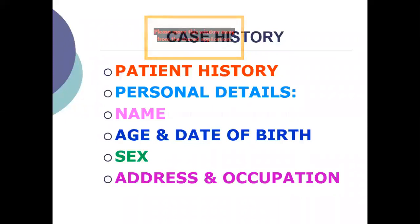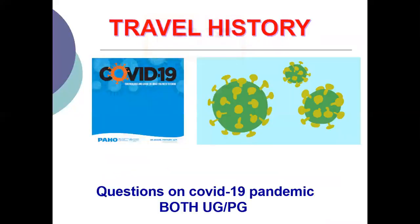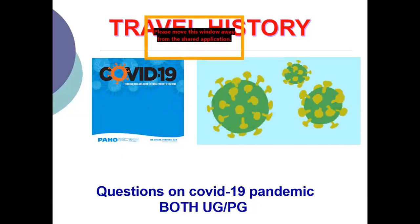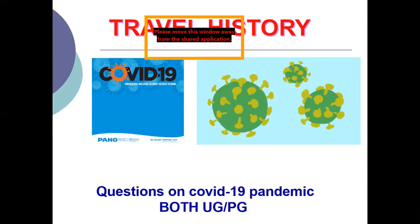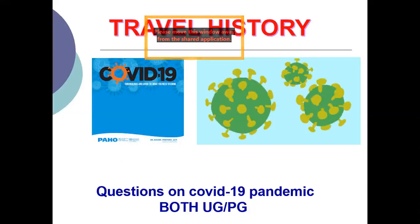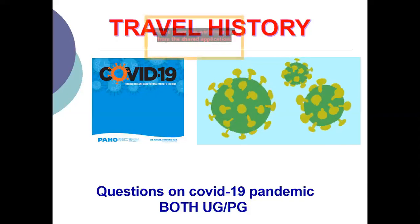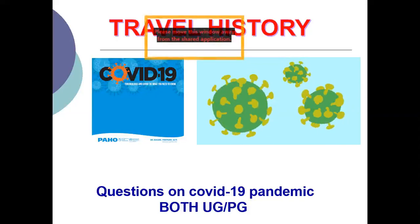Address is nothing but your geographical location - that is also very, very important. Now, to add to the previous slide, the basic things all of you know from the various history forms of the various departments. So the most important thing, after you come back post-COVID, is your travel history. This is very, very important. You want to know from where the patient is coming. Maybe absolutely healthy, but still you need to record this.